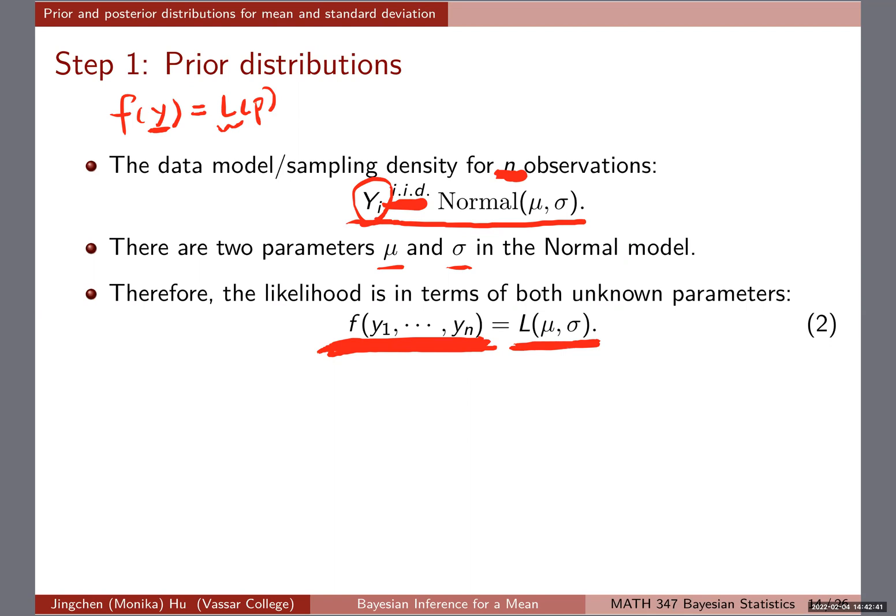It's joint because you have n observations instead of only one observation. Here we have n different observations and we assume they're i.i.d., so the joint density of the observations themselves we can rewrite into a likelihood function of μ and σ. The likelihood function we always use L to represent it.